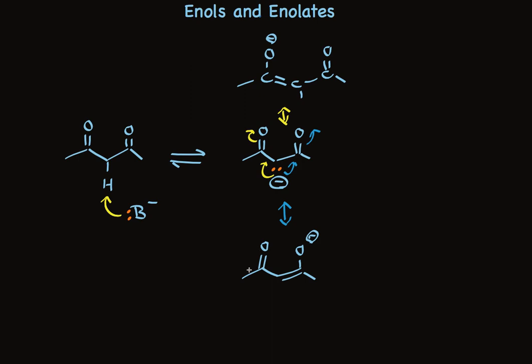Again, the conjugated pi system, negative charge on oxygen. So it's easy to understand why the beta-dicarbonyl compounds are especially acidic.